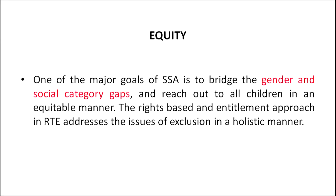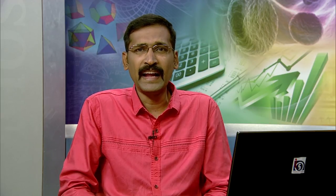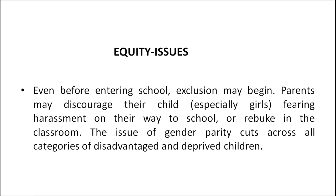The next parameter is equity. One of the major goals of Sarva Shiksha Abhiyan is to bridge the gender and social category gaps and reach out to all children in an equitable manner. Equitable means being fair and impartial. The right-based and entitlement approach in the Right to Education addresses issues of exclusion in a holistic manner. Even before entering the school, exclusion may begin — parents may discourage children, especially girls, fearing harassment on the way to school or rebuke in the classroom. The issue of gender parity cuts across all categories of disadvantaged and deprived children.